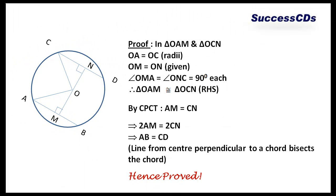Now let's have a look at the proof. In triangles OAM and triangle OCN, OA and OC are equal radii of the same circle. OM is equal to ON, already given. Angle OMA and angle ONC are equal to 90 degrees each. Thus triangle OAM is congruent to triangle OCN.